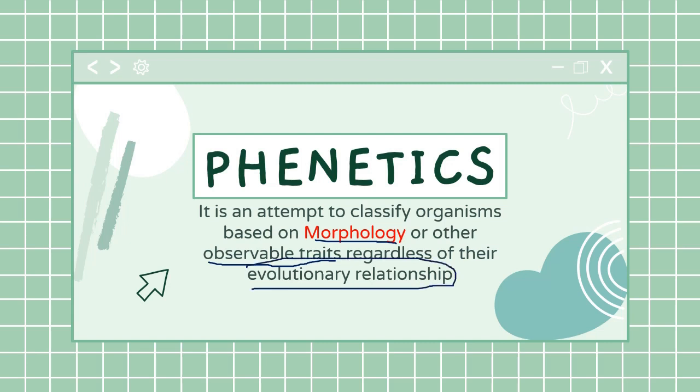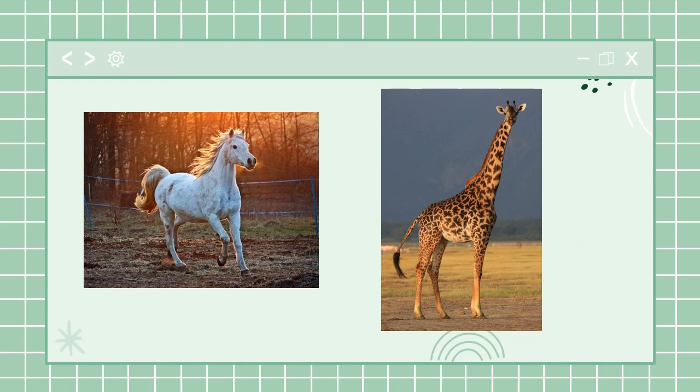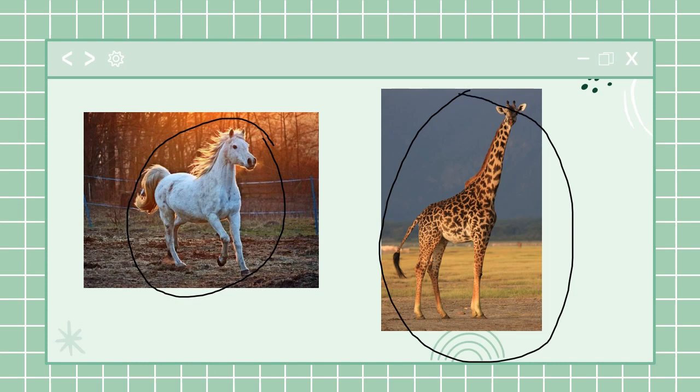These classifications are done regardless of their evolutionary relationship. If I try to explain in layman's language, I can compare a horse and a giraffe in phenetics based on certain observable characters which are similar in both species, for example the presence of a tail, four legs, ears, and having this kind of shape of a face.